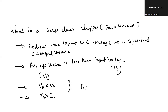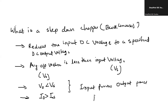The input power equals the output power — power remains the same. The input power is Vs and the output power is P0. Power remains same, but the voltage and current at the input and output side are differing.